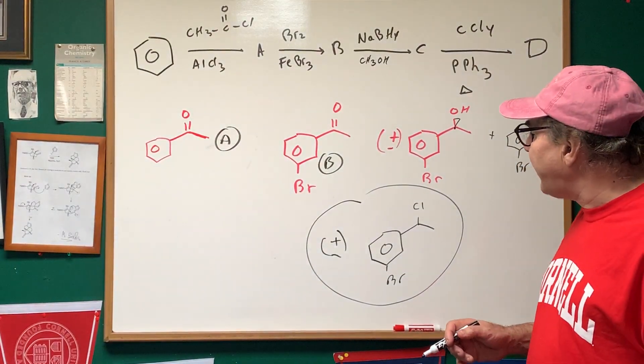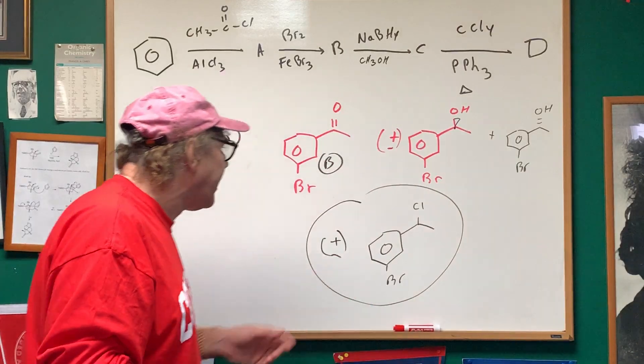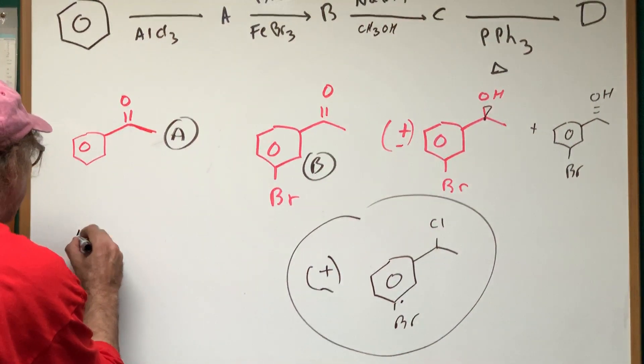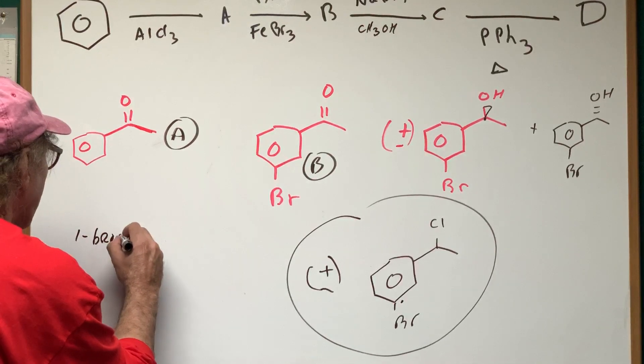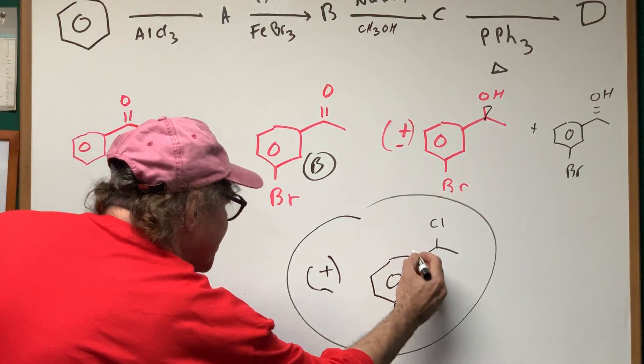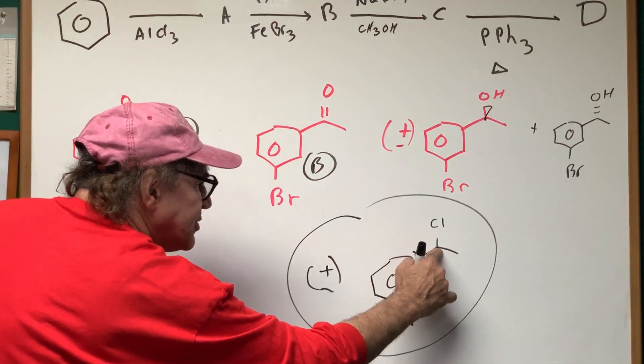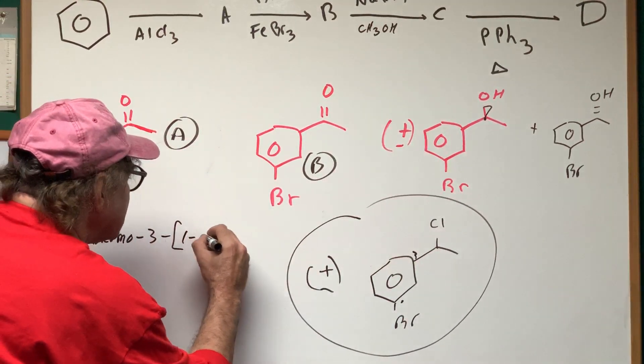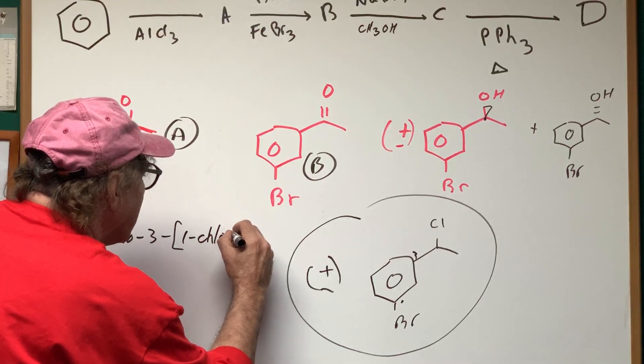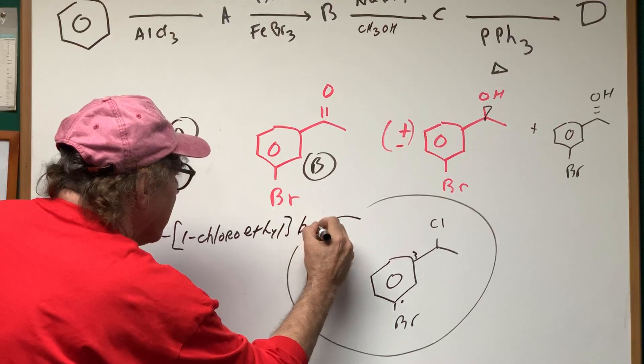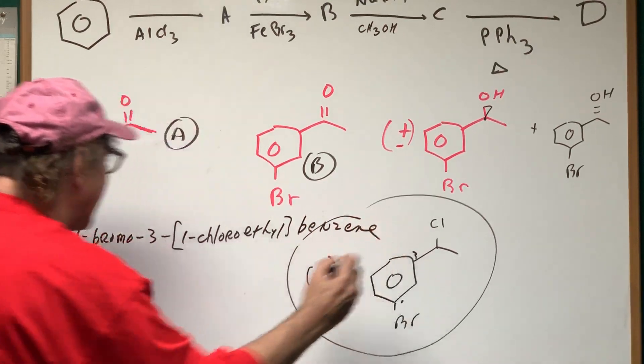For those that are curious, how would I name this? Let me go over here to name this. If I call this my position one, I would get one-bromo, and then this is position three. Now, this is position one off the side chain.